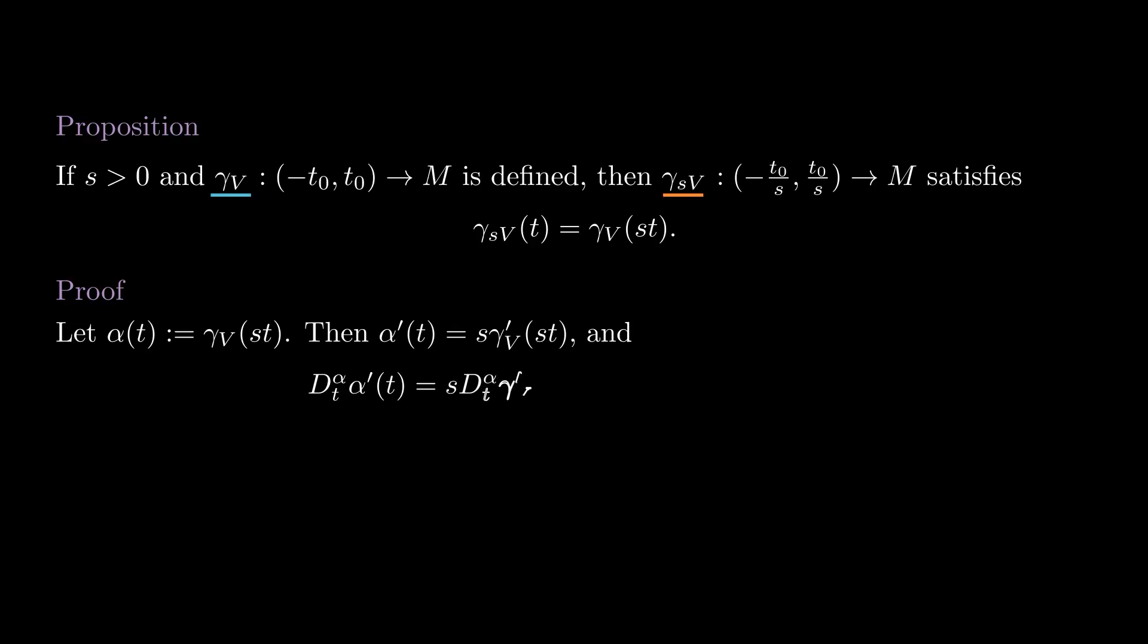By the chain rule for covariant derivatives, the covariant derivative of alpha prime along alpha is s squared times the covariant derivative of gamma v prime along gamma v. Since gamma v is a geodesic, this is zero, so alpha is also a geodesic. Since the initial velocity was s times gamma v prime of zero, it equals sv. This shows that alpha equals gamma sv, proving the proposition.